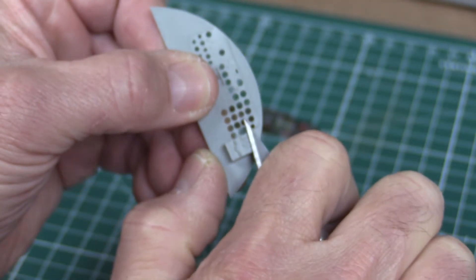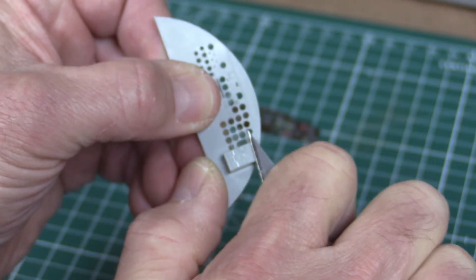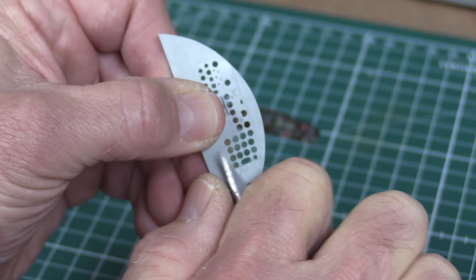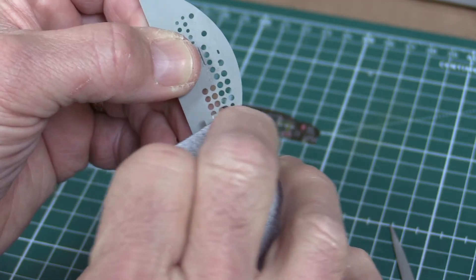The photo etch parts replace the detail that's on the kit parts in many instances, so the next step will be to remove the raised detail from the instrument panel with an exacto knife and some sandpaper.